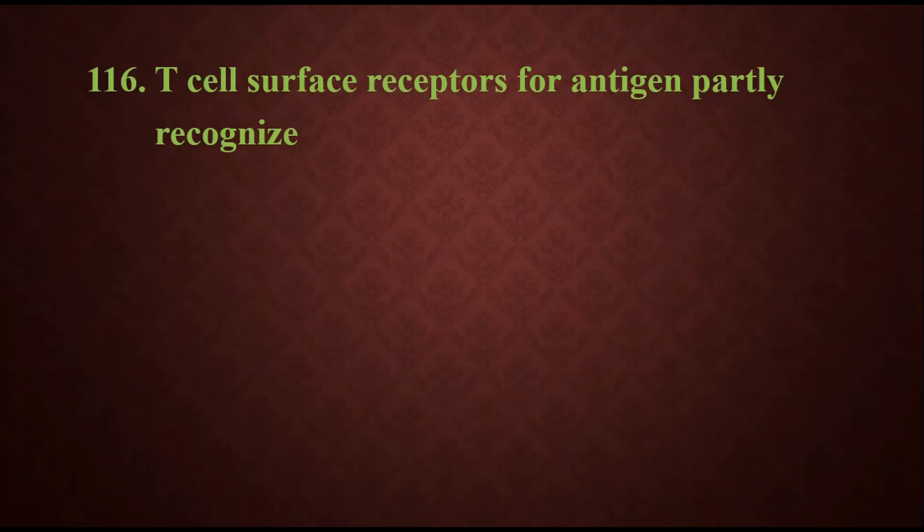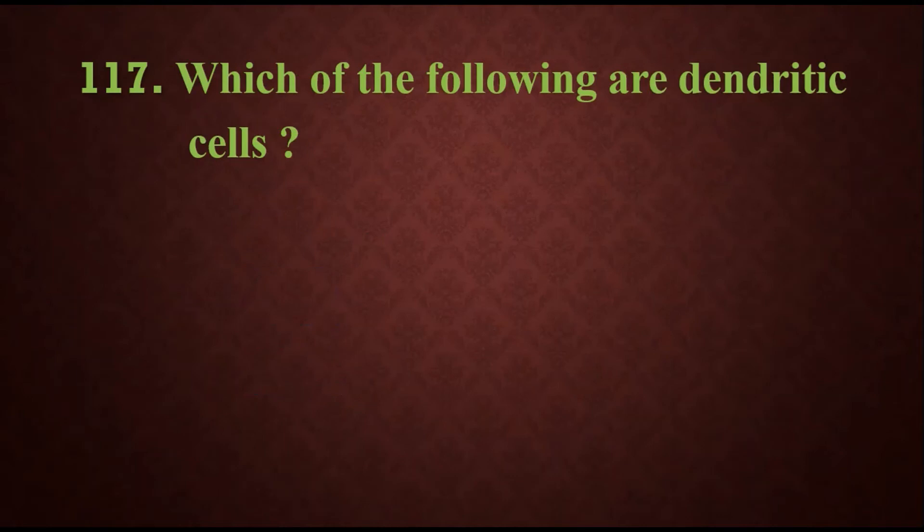Question 116: T-cell surface receptors for antigen partly recognize options: cytokines, MHC that is major histocompatibility complex, ADCC antigen differentiation, or antibody. The answer is MHC, major histocompatibility complex.